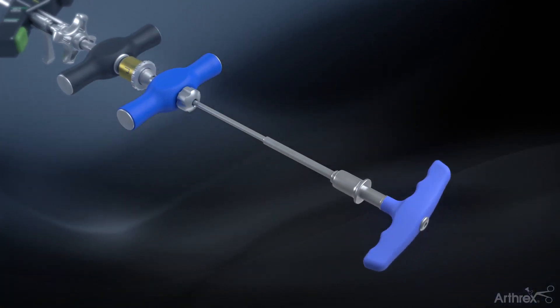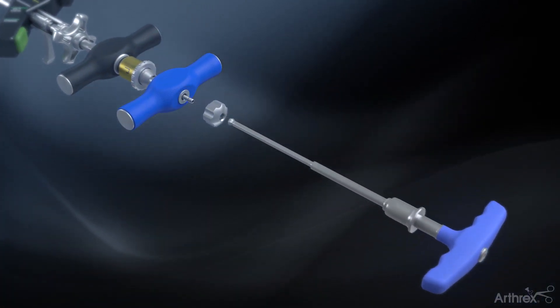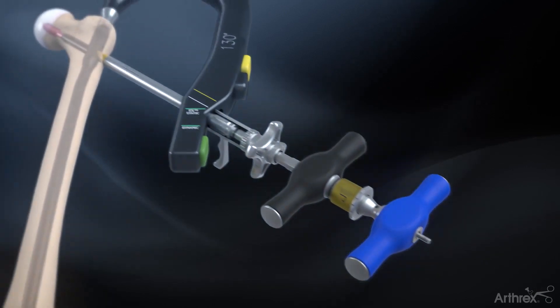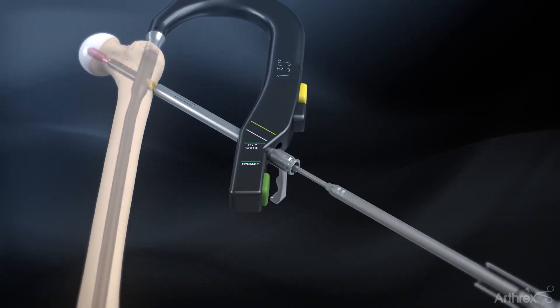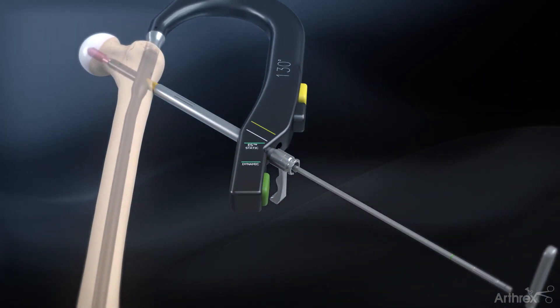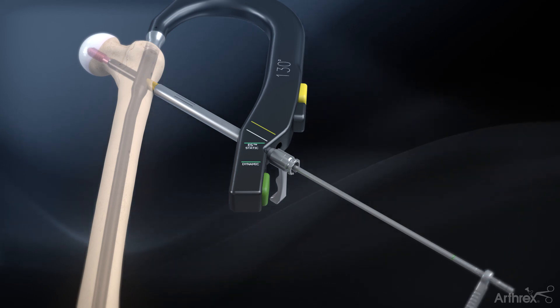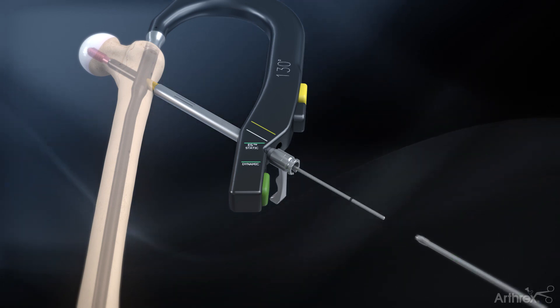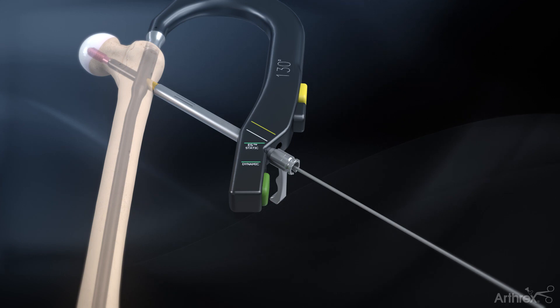Remove the lag screw capturing rod nut by hand or with the ball hex driver. Pull out the lag screw inserter assembly and unscrew the lag screw capturing rod by hand or with the removal tool. The lag screw guide pin is also removed.